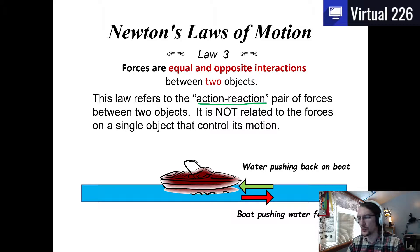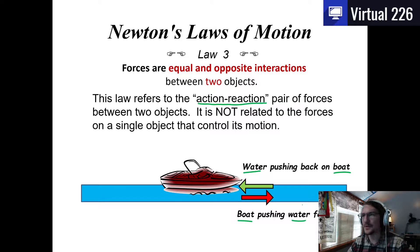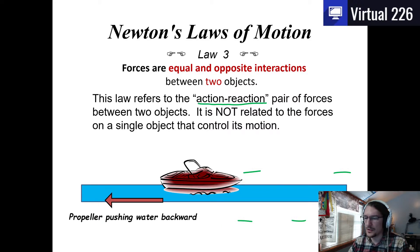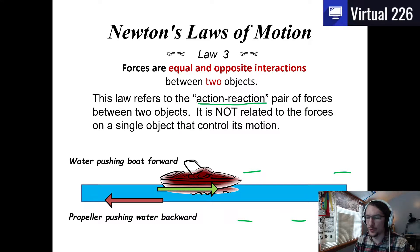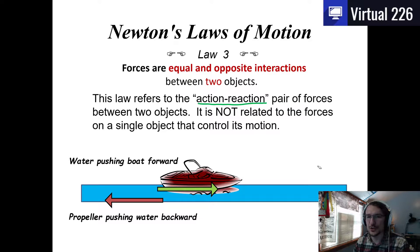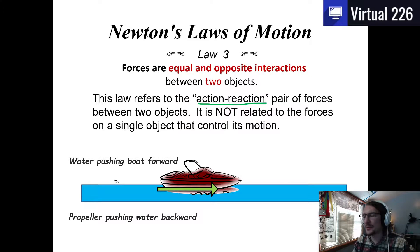The boat pushes the water forward — notice the pairing: water-boat, boat-water. In another example, a boat moves forward because the propeller pushes the water backwards, and then the water pushes the propeller — and the boat attached to it — forward. That is an action-reaction pair. You can't just say the propeller spinning makes the boat go forward; if you spin a propeller in the air, the boat won't move because air isn't dense enough to push off of.